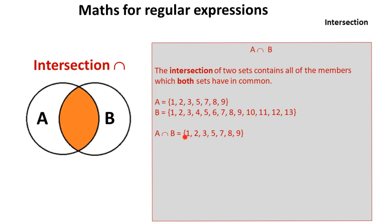When we perform an intersection on them, the resulting set has only the elements which were in both A and B. Any elements which are only in one or the other are excluded from the new set.